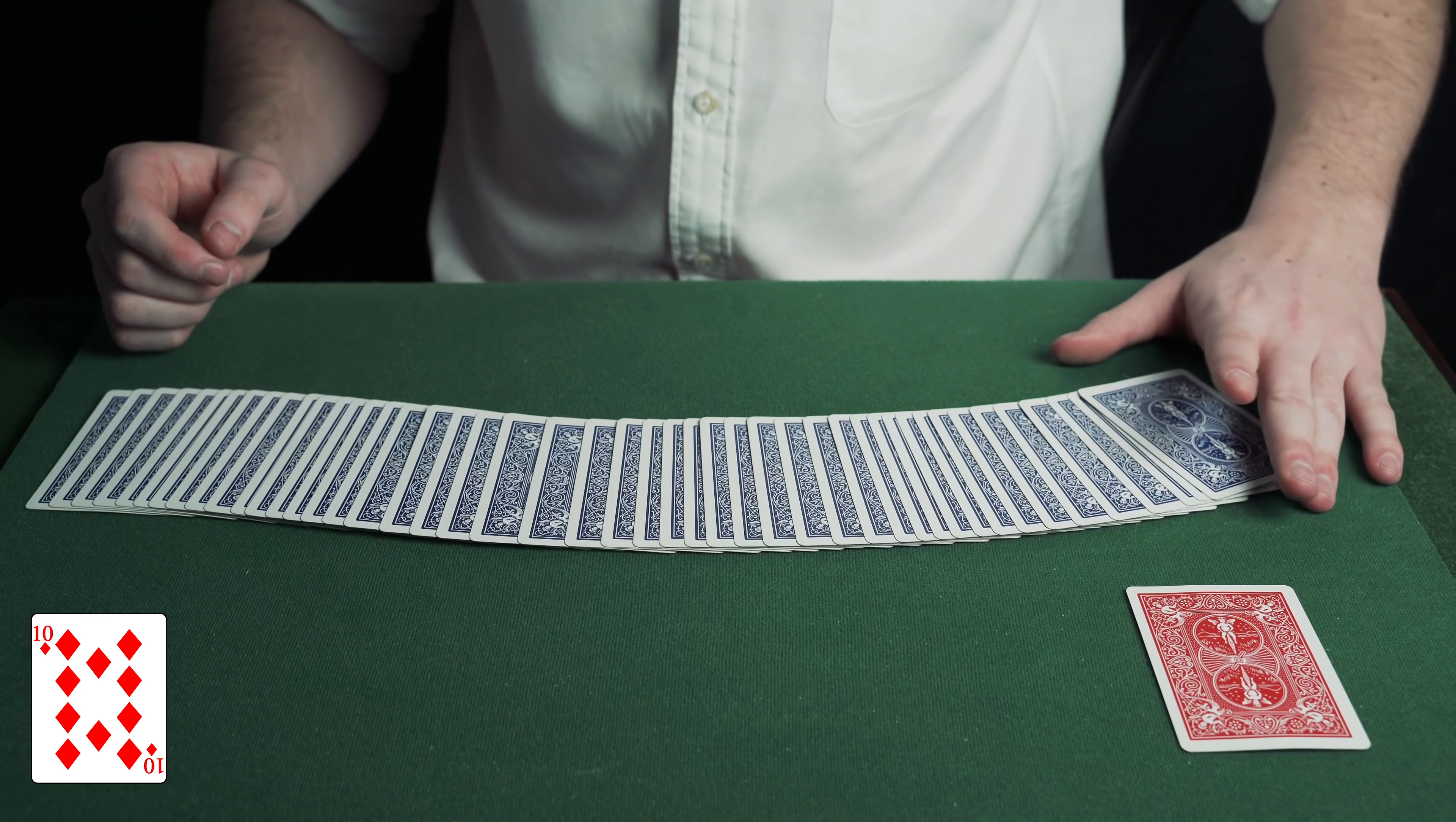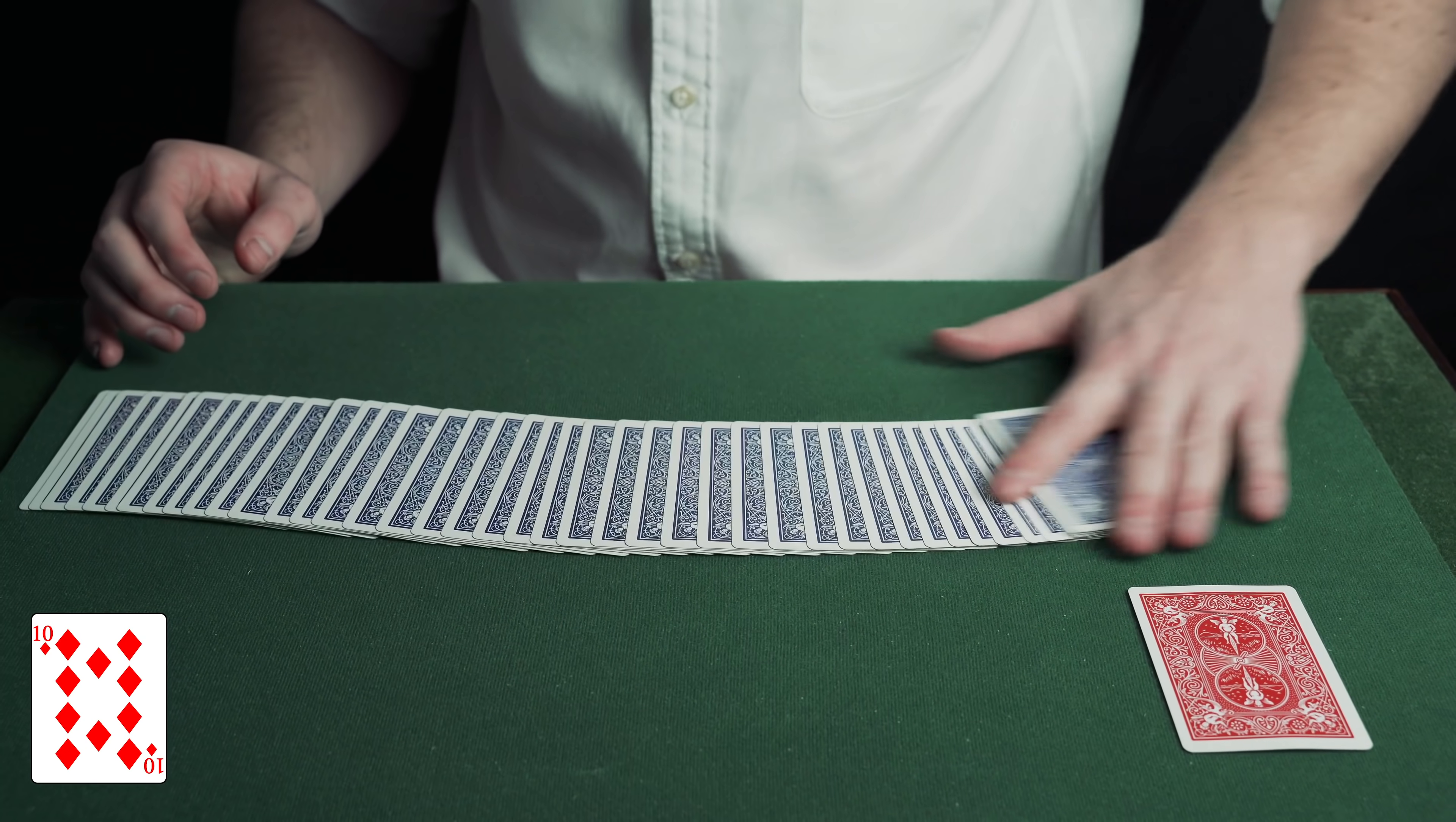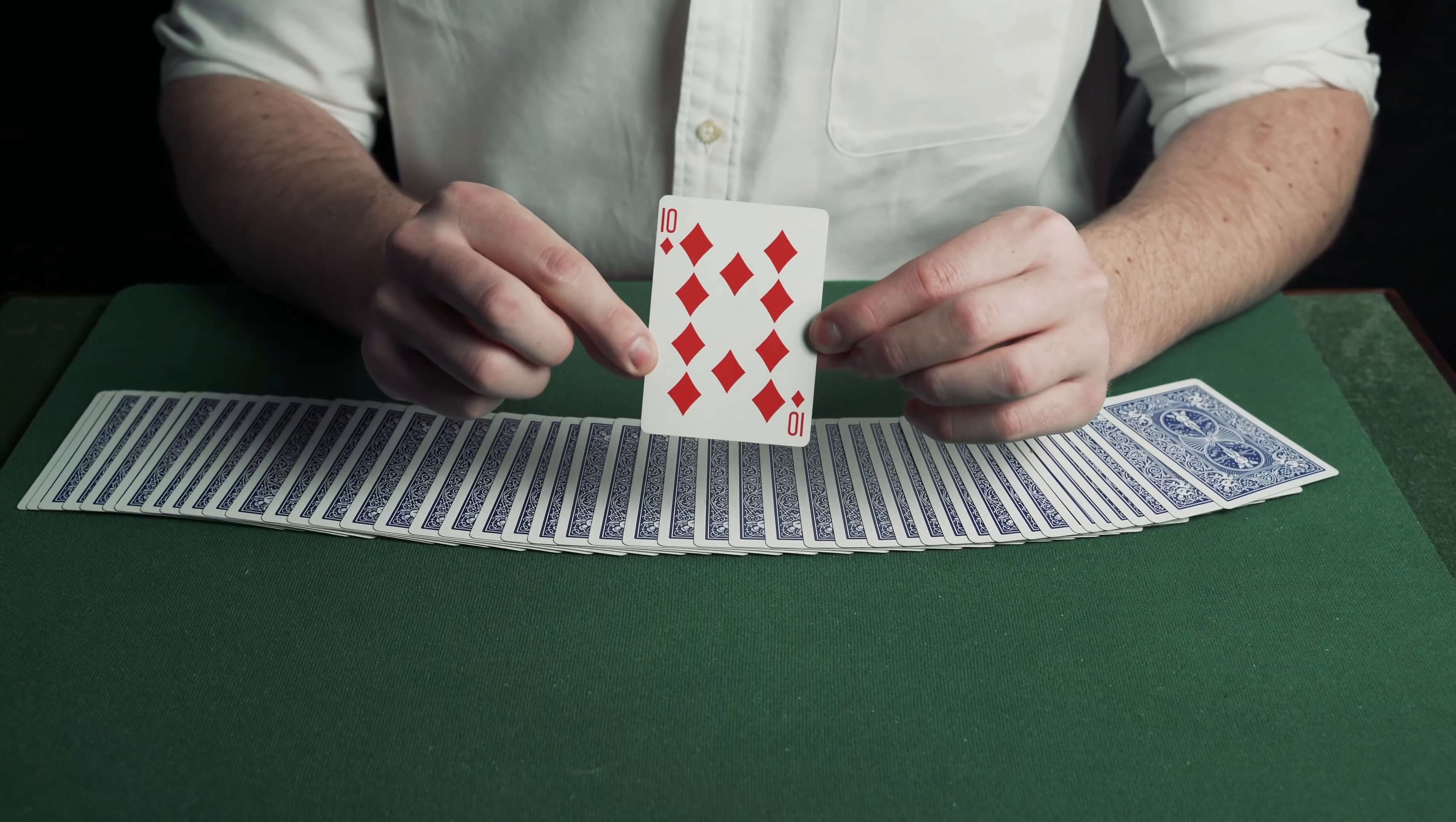He spreads out the cards but there is no red card. So the magician cuts the cards, waves his hand over them, and spreads them out again, but there is still no red card. The magician then points to the red four of spades from earlier, picks it up, and it is magically changed into the spectator's ten of diamonds.